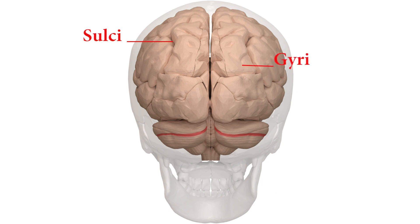Sulci is a shallower groove that surrounds a gyrus. Gyri is a ridge on the cerebral cortex. Sulci and gyri contain billions of neurons, each one may connect to thousands of others. It also has some grooves; these gaps are called fissures.